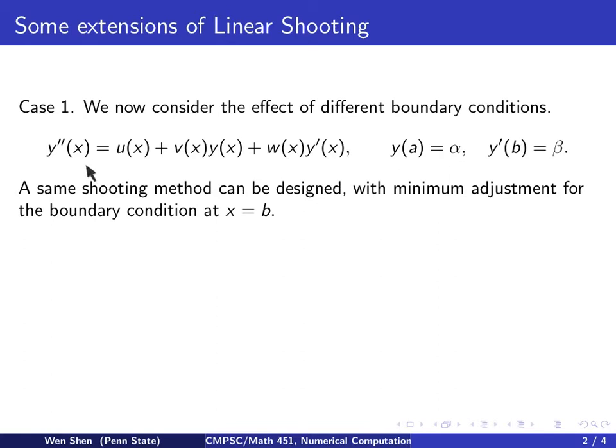We consider the same standard linear second order equation, but now we have slightly different boundary conditions. We have y at a is alpha, but we have y prime at b equals to beta. So how can one design a shooting method for this problem?